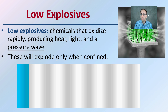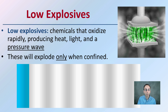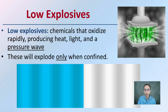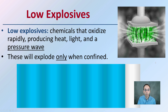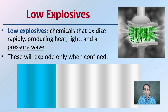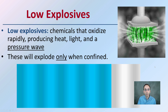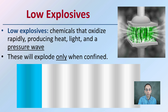Low explosives are chemicals that oxidize rapidly, producing heat, light, and a pressure wave. These will explode only when they are compressed or confined in an area. There are slight differences from high explosives, but again, explosives are still very dangerous and things to be considered when doing an investigation.